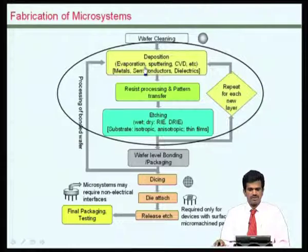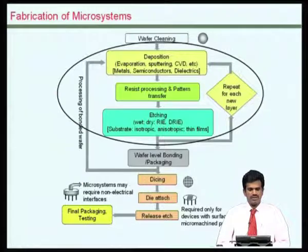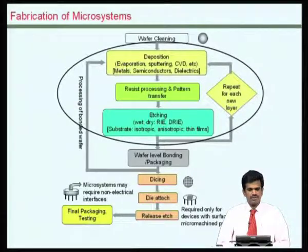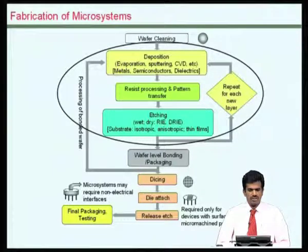Deposition schemes involve evaporation and sputtering — these are two of the physical deposition schemes commonly used. There are several chemical vapor deposition schemes as well. On top of these films, we transfer the resist and then transfer the pattern using lithography, and then use various types of etching to remove part of the film.